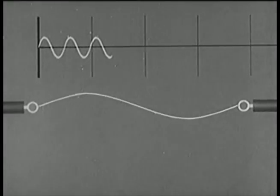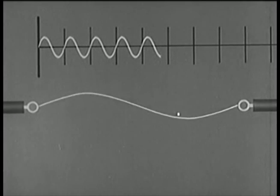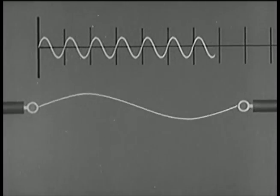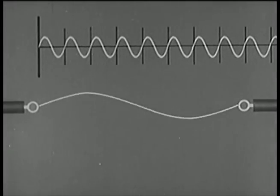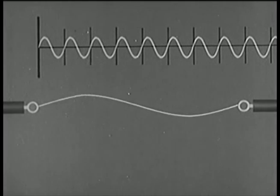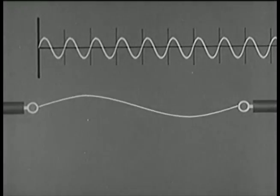If the string vibrates in two segments, it produces a wavelength that's one-half that of the fundamental. This is the first overtone, which may be called the second partial. Since wavelength is inversely proportional to frequency, the frequency of the first overtone is twice that of the fundamental.